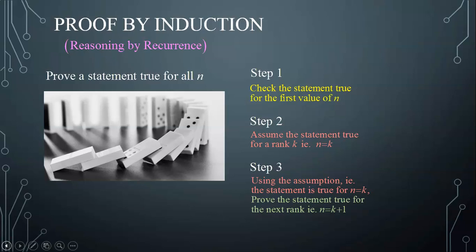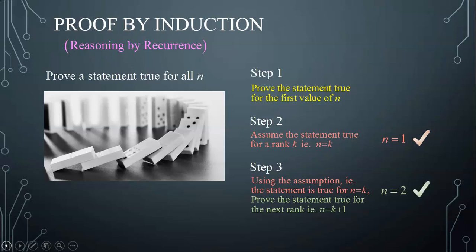Now why does that have the domino effect? Because we started by checking the statement true for the first value of n, say n equals to 1. That is like knocking down the first domino. Then knowing the statement true for n equals to 1, according to step 3, the statement should be true for the next rank n equals to 2, which knocks down the second domino.